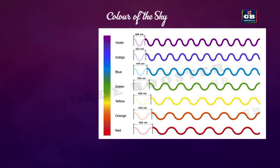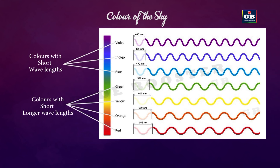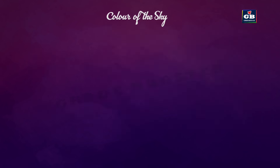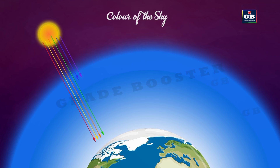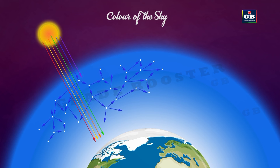Color of the sky: sunlight is composed of a spectrum of colors, each with different wavelengths — red with longer wavelengths and violet with shorter wavelengths. When sunlight enters the Earth's atmosphere, blue and violet light rays with shorter wavelengths are scattered more by small particles than longer wavelengths like red and yellow. As a result, the blue and violet wavelengths scatter in all directions, making the sky appear predominantly blue during daytime.